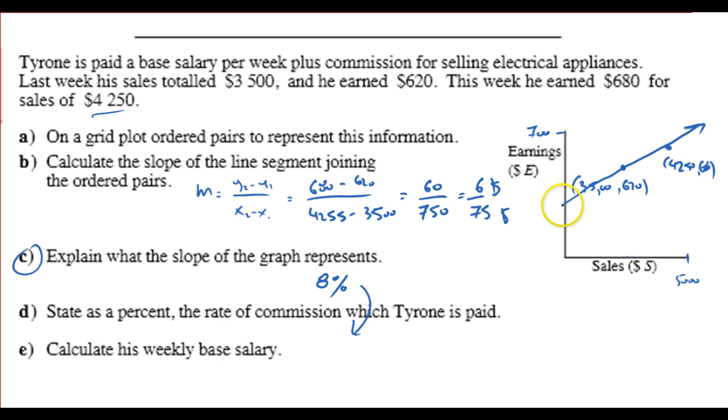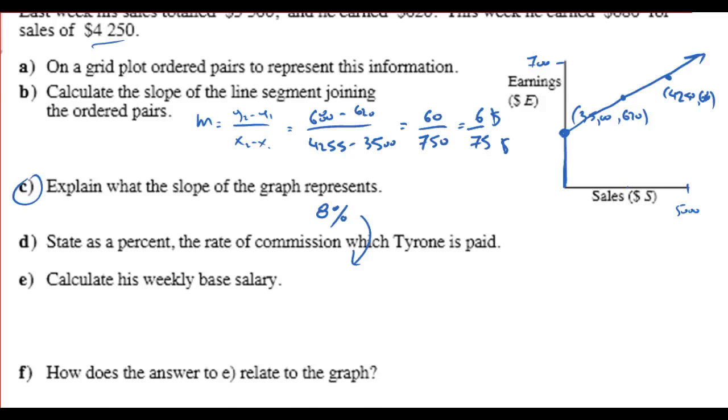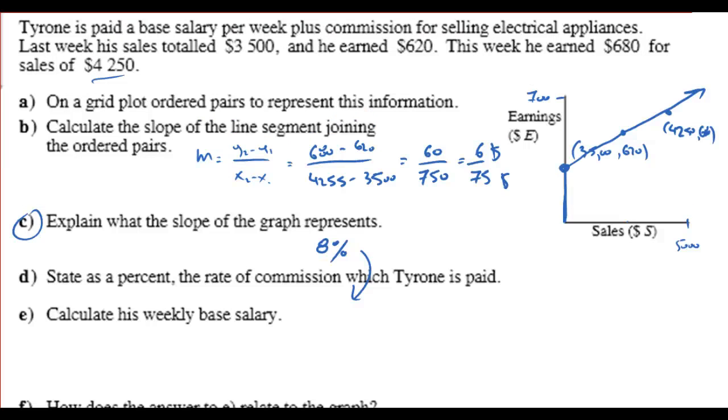Calculate his weekly base salary. Weekly base salary is here. So, even if he doesn't sell anything, he still makes some change. That's the Y-intercept. How are we going to calculate the Y-intercept? Well, in order to do that, I need to come up with an equation first. And again, knowing all our knowledge with the different forms of equations, I have the slope and I have a point. So, I'm going to jump right into Y minus Y1 equals M times X minus X1. And pick any of the points. I might pick this one here. It might be a little bit easier to work with. Y minus 620 equals 6 over 75, X minus 3,500.